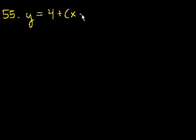We're on problem 55. If y is equal to 4 plus x minus 3 squared, then y is lowest when x is equal to.